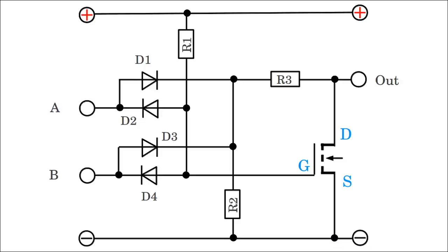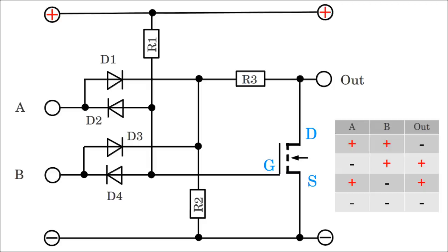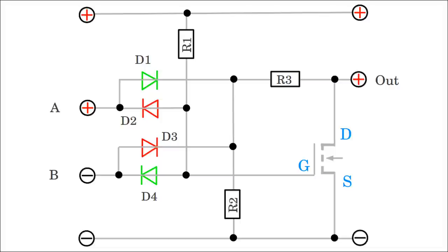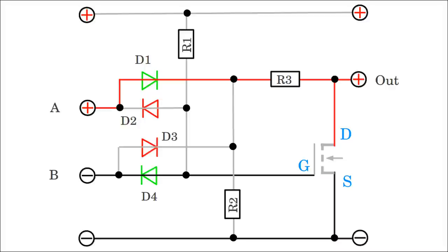The XOR gate implements the exclusive OR function. The output is high if only one of the inputs is on high level. Here input A is high, hence diode 1 is forward biased and the drain voltage of the transistor equals nearly the potential at that input, which is the positive supply voltage. Input B is low, hence diode 4 is also forward biased pulling the gate of the transistor to nearly 0V. The transistor is turned off, hence the potential at the output terminal equals nearly that of input A, which is the positive supply voltage.